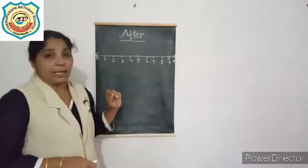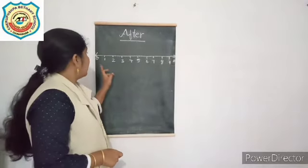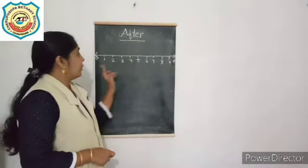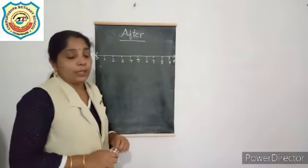Children, you already learned the number line. This is a number line from 0 to 10. We will discuss about after number.